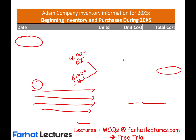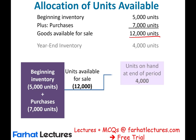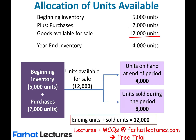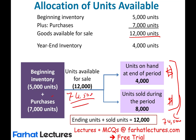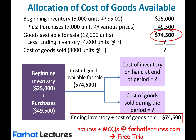We have to choose a method and make an assumption and move along with it. We have 12,000 units goods available for sale. We're going to have 4,000 in ending inventory and 8,000 in cost of goods sold — it does not matter which method we use for the unit counts. What will make a difference is the dollar amount assigned to ending inventory and cost of goods sold. But both together will always equal $74,500.